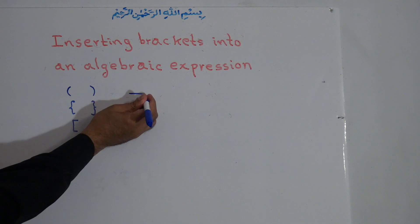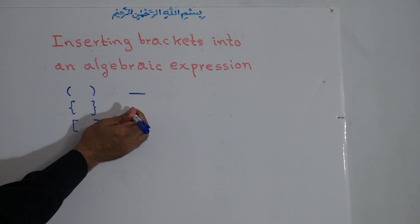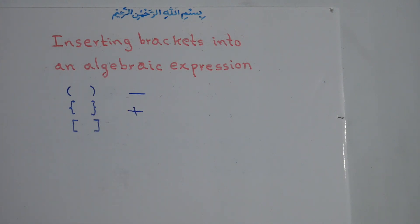If we put a negative sign in front of the bracket, all the terms inside the bracket will have their signs changed — if they are positive they become negative, and if they are negative they become positive. But if the sign in front of the bracket is positive, the signs inside the bracket will not change and remain the same.